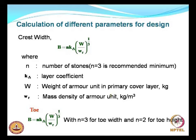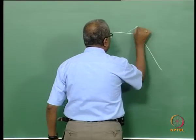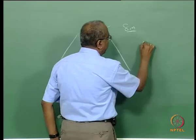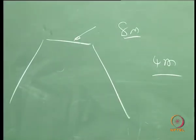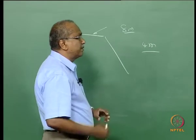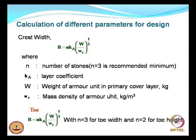For the calculation of other parameters — the crest width of the breakwater is typically taken as 8 meters for commercial harbours and 4 to 5 meters for fishing harbours and minor ports. The breakwater crest width can be calculated using the formula where N = 3 is the recommended minimum, K_delta is the layer coefficient, W is the armour layer weight, and the mass density of the armour unit is used. For the toe, width and height are calculated with N = 2.